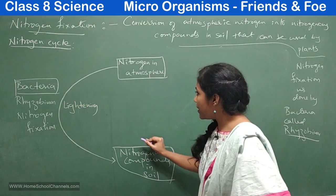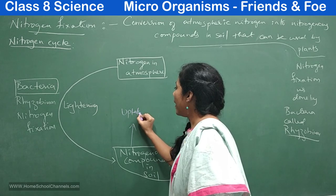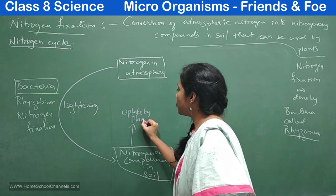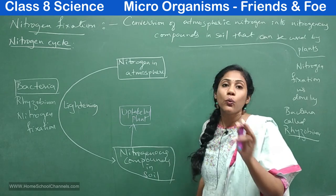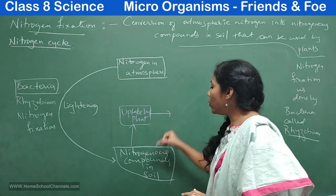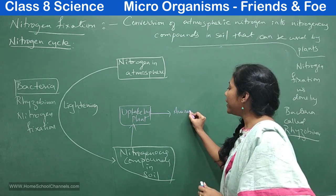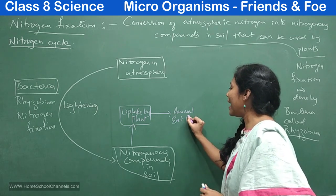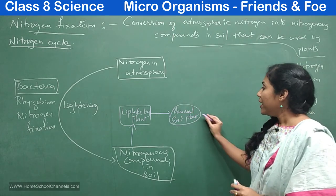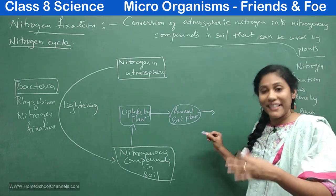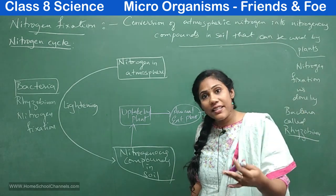After that, these nitrogenous compounds are taken up by plants. So plants grow in soil and from soil these nitrogenous compounds enter into the plant body. Slowly that nitrogen enters into animals also — animals eat plants, so that way nitrogen enters into the animal body too. Now animals excrete waste materials from the body, and those excretory substances contain nitrogen.